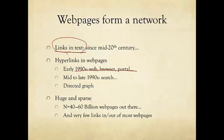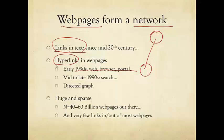Now we can view these web pages as a network — a network of information represented as web pages. Each node is a web page, and a link is what's called a hyperlink. It connects the text in one web page to that of another web page, and you go from this page to the other by clicking on that link. The fact that web page A points to web page B doesn't mean that B points back to A, so we have to provide a sense of direction to this link. We call this a directional link.